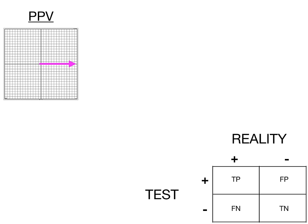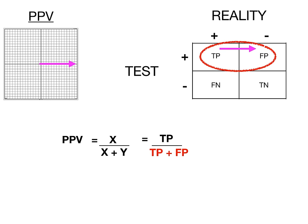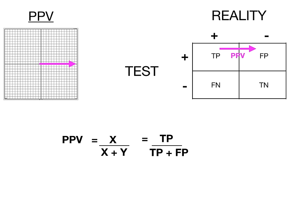Now let's talk about positive predictive value. To figure out which way the arrow goes, we use a graph grid. If you're really positive, you move in the positive direction — pretty straightforward. So we draw the positive predictive value arrow from left to right in the first eligible spot of the 4x4 table. Positive predictive value equals true positive over true positive plus false positive — numerator is where the arrow begins, denominator is where it begins plus where it ends.